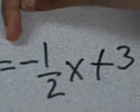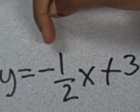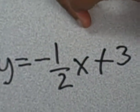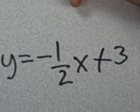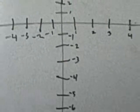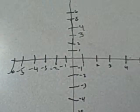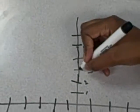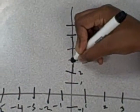Hi, I'm Susanna, and the problem is y equals negative one-half x plus 3. The slope is negative one-half, and the y-intercept is 3.